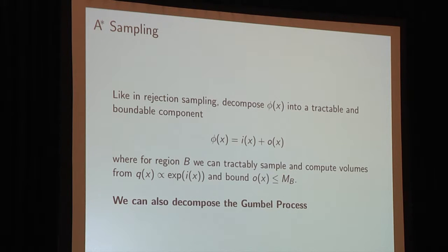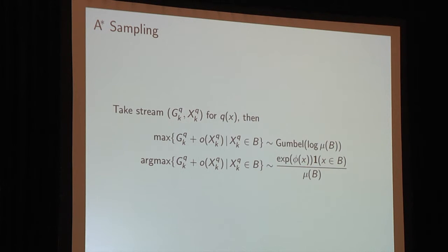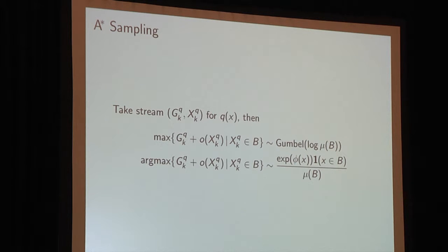This decomposition is useful because we can also decompose Gumbel processes. We can take a stream of values G^Q from the Gumbel process for Q — our proposal distribution — and transform it into a realization of a Gumbel process for P simply by adding the difference in the log densities to the Gumbel values. Once we've added the O of X's to the stream, if we take the max of the Gumbel value and O of X at its location, for all X's that hit B from the Q distribution, the distribution of that is Gumbel(log measure mu of B) corresponding to P, and the argmax is distributed according to the P distribution restricted to B.